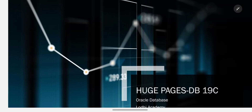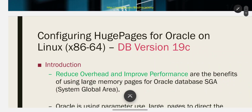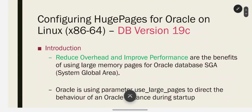In this video we will configure huge pages for Oracle 19c database on Linux 64-bit. This configuration is for Oracle 19c, as previous configurations were for version 12c. Reducing overhead and improving performance are the benefits of using large memory pages for Oracle database.